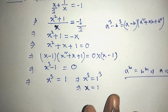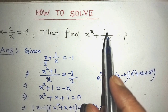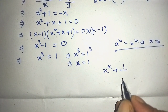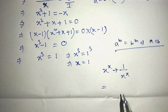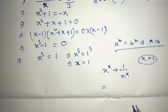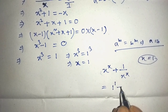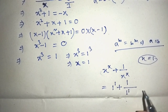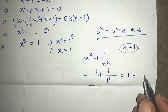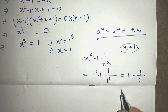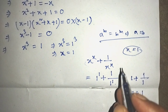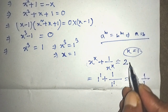Now we find the value of x to the power x plus 1 over x to the power x. We put the value x equals 1 into this algebraic expression. So we get 1 to the power 1 plus 1 over 1 to the power 1. Now 1 to the power 1 is 1, plus 1 over 1 to the power 1, which is 1. So we get 1 plus 1 divided by 1, that is 1. And 1 plus 1 equals 2. So the value of this algebraic expression is 2. This is our final answer.